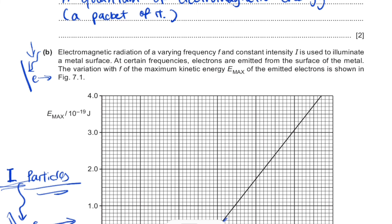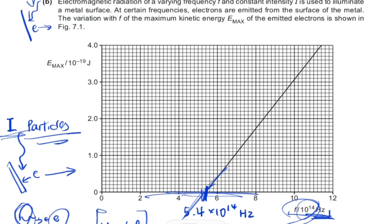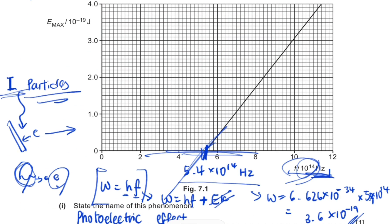That's how to answer a question on photoelectric emission. It's straightforward because it concerns one phenomenon that is easy to understand. The most important thing is to correlate it to particle theory, not wave theory — this was proved by Einstein and helped demonstrate that waves also behave as particles. I hope this was helpful for A-level physics; check out the rest of my channel for more videos.